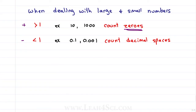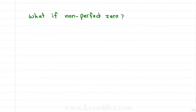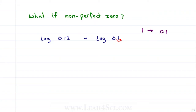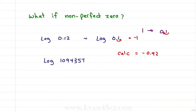What if your log problem doesn't have a perfect zero? If the number is close to zero, just round: log of 0.12 is about the same as log of 0.1, which is one decimal space in the smaller direction, giving negative 1. The calculator gives negative 0.92 — close enough. For log of 1,094,357, round and count zeros: 1, 2, 3, 4, 5, 6 — positive direction gives positive 6. The calculator gives 6.03.